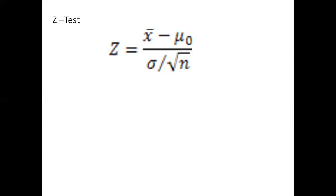Z-test is based on standard normal distribution and it is also called the large sample test. The calculating formula: z equals x-bar minus the population mean, divided by the standard deviation over the square root of the number of observations.